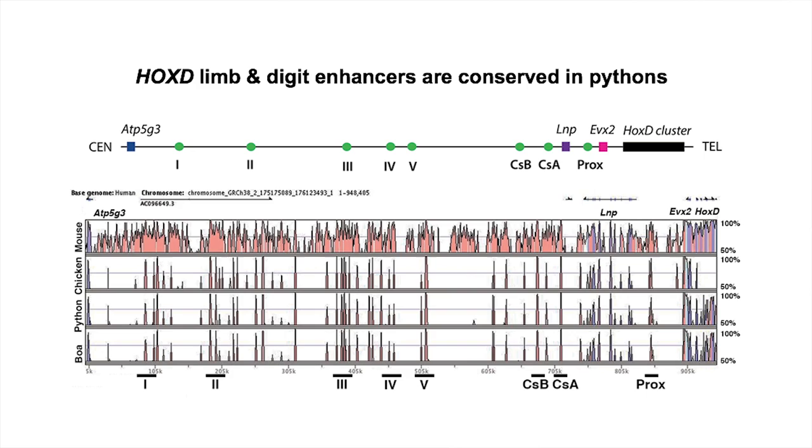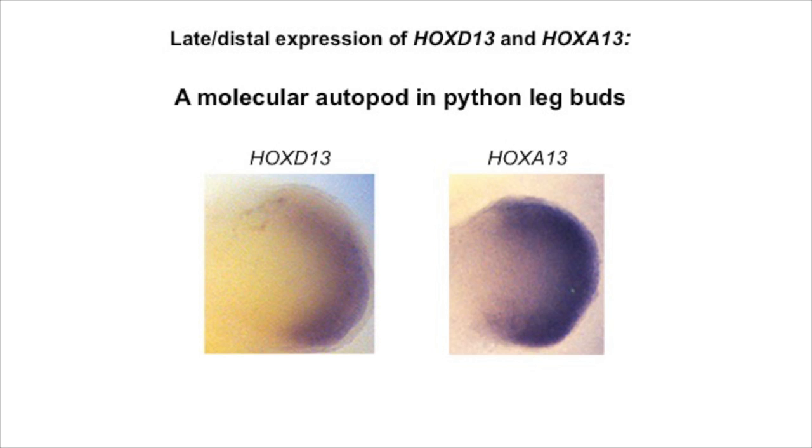When we looked at the regulatory landscape that controls HOXD13 expression, we found very striking conservation. All of these regulatory elements that are necessary for driving HOXD13 expression in the limb, including in the foot plate of the limb, were present in pythons. And the structure of the enhancers appeared to be very well conserved. So conservation of this gene regulatory landscape, we think, can explain why pythons have held on to this distal domain of expression.